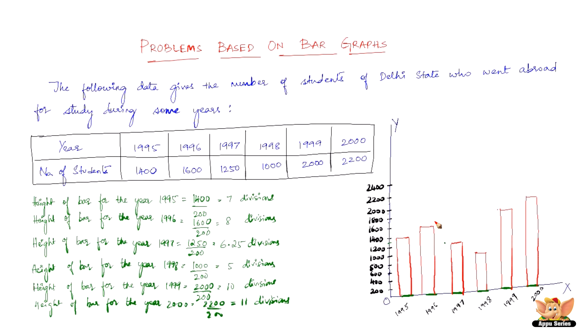And then we write on top of these the values of them. This is 1400, this is 1600, this is 1000, this is 2000, and this is 2200.